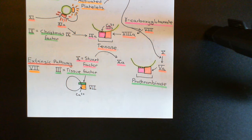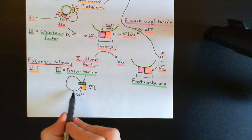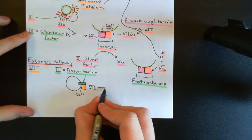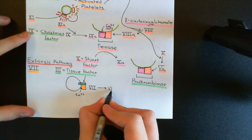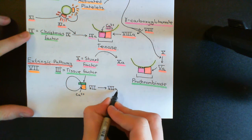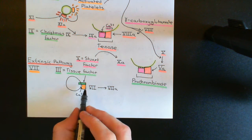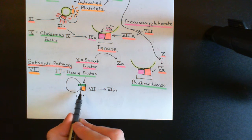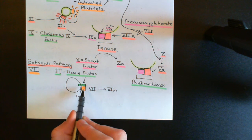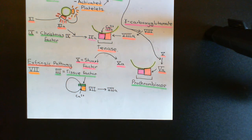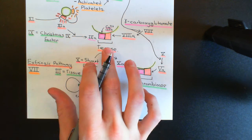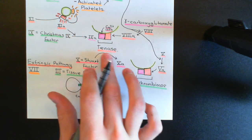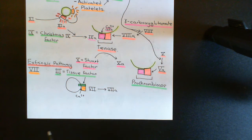And now what will happen is 7 will be changed to its active form. So in this complex, 7 will go on to form 7a. So you're now going to have this complex involving factor 3, factor 7a, and calcium. And what is this complex now going to do? Well, it's going to act as an activator of 10 in the same way as the tenase that we had over here acted as an activator of factor 10.